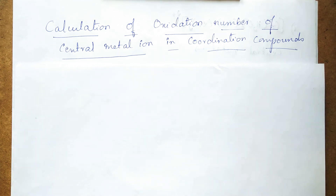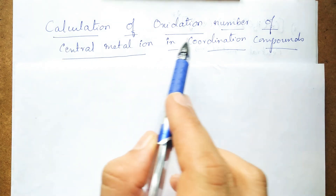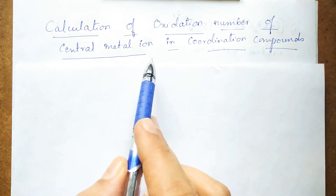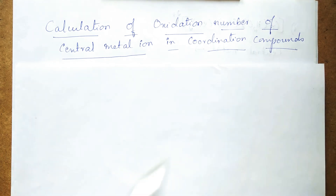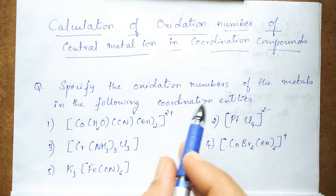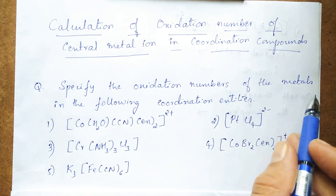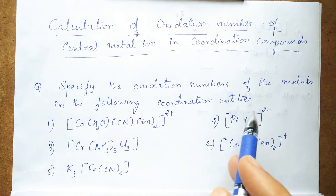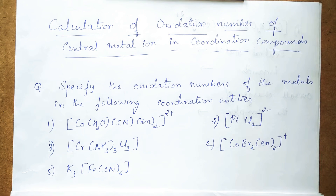In today's video I am going to explain the calculation of oxidation number of the central metal ion in coordination compounds. To explain this concept I have selected a question from the NCERT textbook: 'Specify the oxidation numbers of metals in the following coordination entities,' and they have given formulas of four to five complexes.